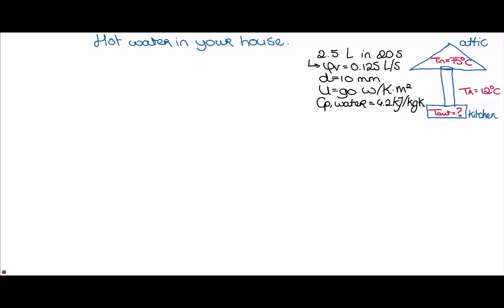Where is the hot water heater in your house? In this sketch you can see that the hot water heater of Julia is in the attic. The kitchen is some distance away on the opposite side of the house, and we have to calculate the outlet temperature of the water that flows from the attic to the kitchen. The environment temperature is 12 degrees Celsius. With 2.5L of water flowing in 20 seconds to the kitchen, we can calculate the volume flow of the water, which is 0.125L per second.